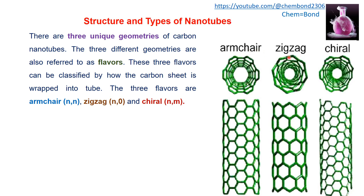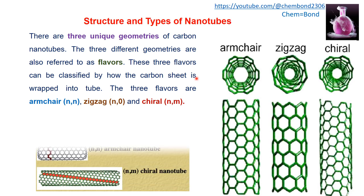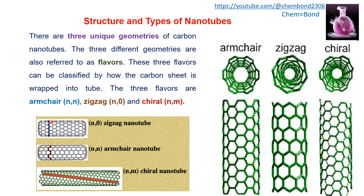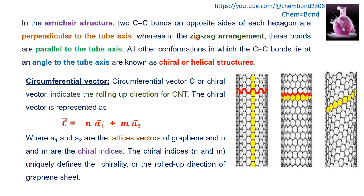Depending upon the cutting orientation, armchair, zigzag, and chiral carbon nanotubes are obtained. The zigzag orientation results in a zigzag carbon nanotube, the armchair orientation produces an armchair carbon nanotube, and the third possibility — neither armchair nor zigzag — is known as the chiral carbon nanotube.